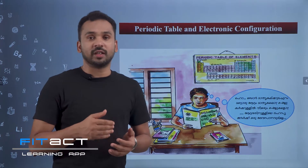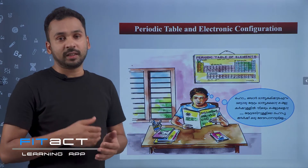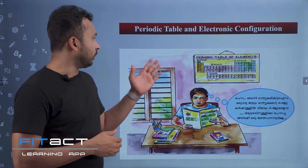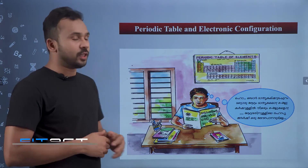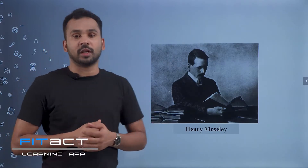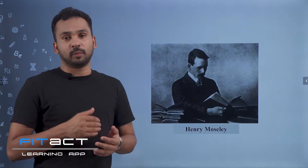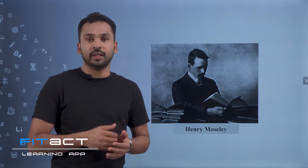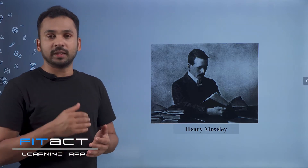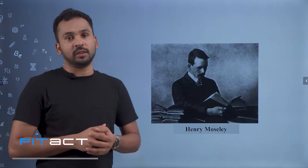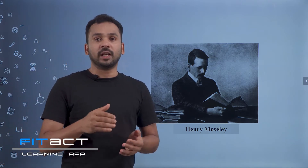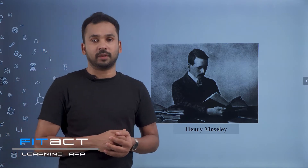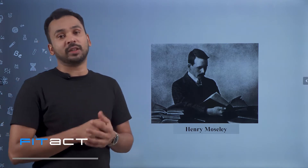Hi students, today we are discussing the first chapter in 10th standard chemistry: periodic table and electronic configuration. Henry Mosley and scientists discovered that the properties of an element depend on the atomic number and electronic configuration of that element. Based on this, he classified 118 elements in increasing order of their atomic number in a table. This is the Modern Periodic Table.